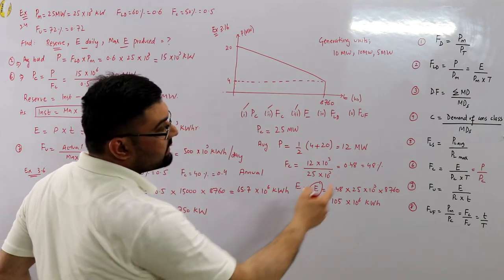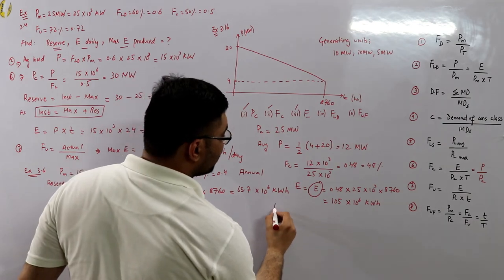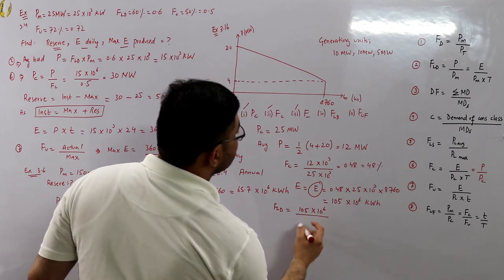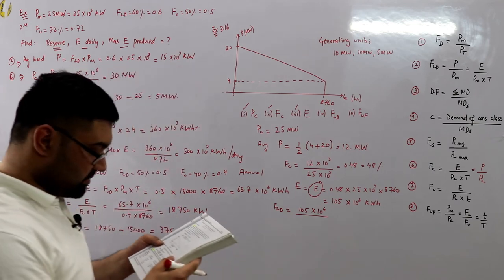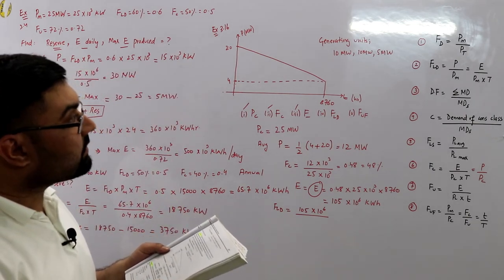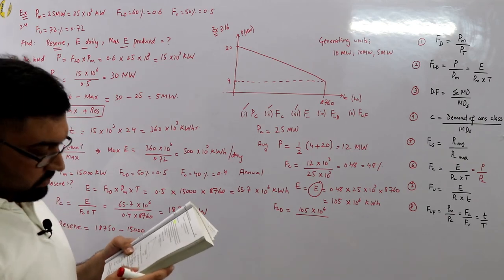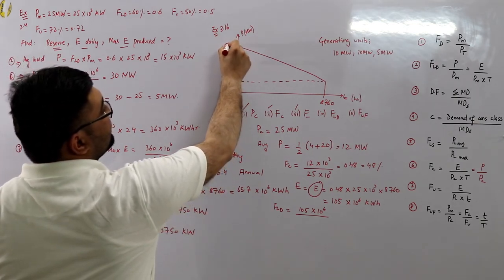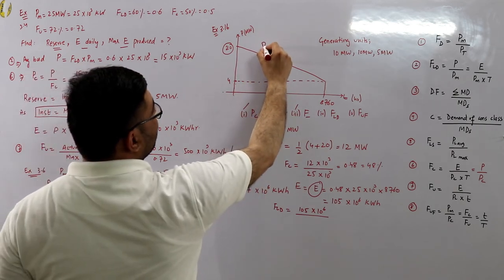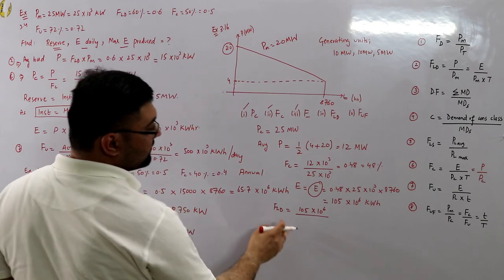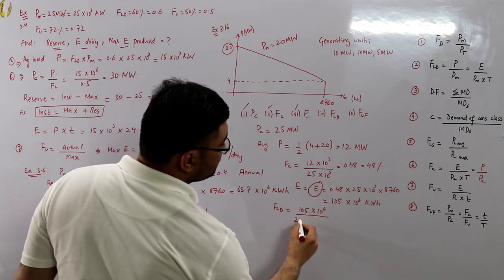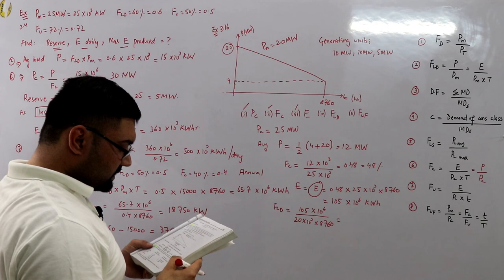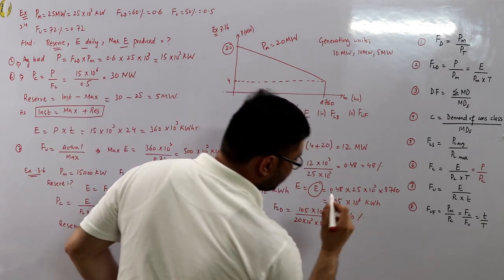The load factor FLD = E ÷ (PM × T) = 105×10⁶ ÷ (20×10³ × 8,760), or equivalently P ÷ PM = 12 ÷ 20. This comes out to be 60%.